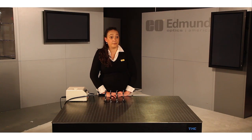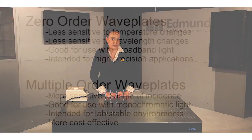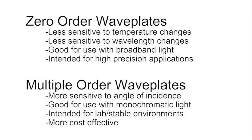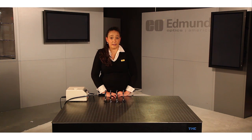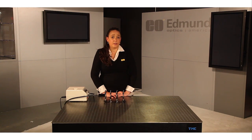However, zero order wave plates are very fragile and typically higher cost. Multiple order wave plates are designed for later periods so they can be thicker and easier to manufacture. This also makes them more sensitive to wavelength and incident angle, so they are recommended to be used with monochromatic light and in a lab environment. However, they are often the more cost-effective solution.